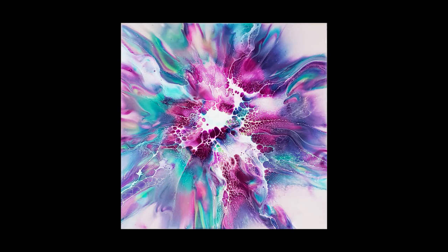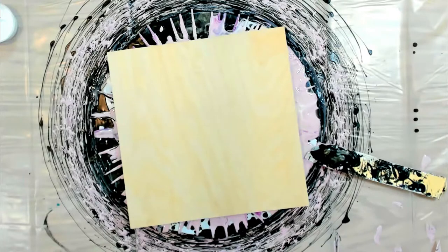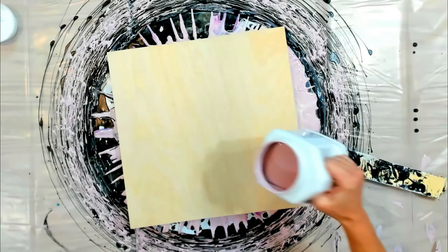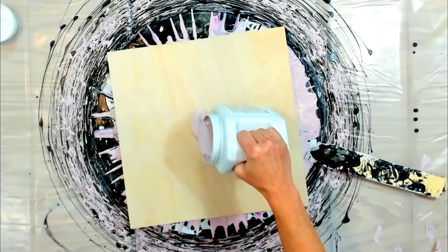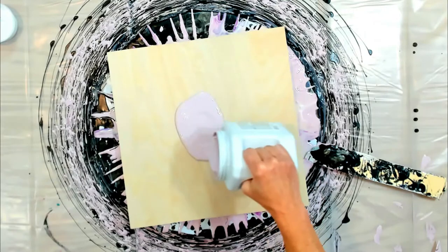I'm going to walk you through how I made this particular piece. This is a 12 by 12 uncradled wood canvas. As you can see, I have it on my spinner, which is just a lazy Susan that I added a stick underneath so I can rotate it.